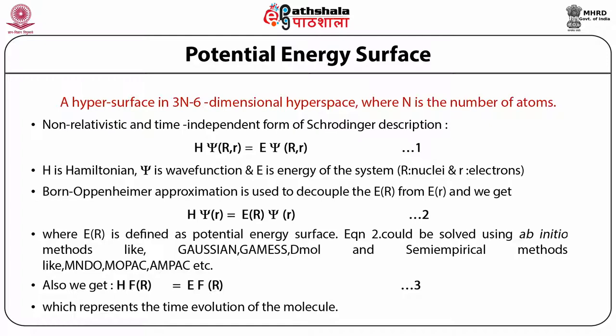Solving this, ab initio methods are available under packages called Gaussian, GAMESS, etc. Semi-empirical methods are also available, such as MNDO, MOPAC, etc. These software packages deal with the quantum chemical way of delineating the surface, presenting nuclear motions into the potential energy surface, and deal with only how many orbital electrons are available.